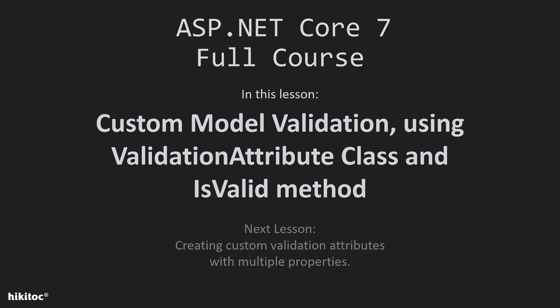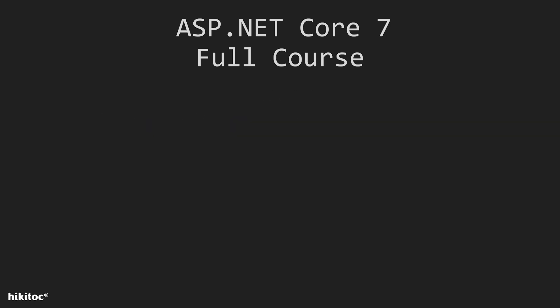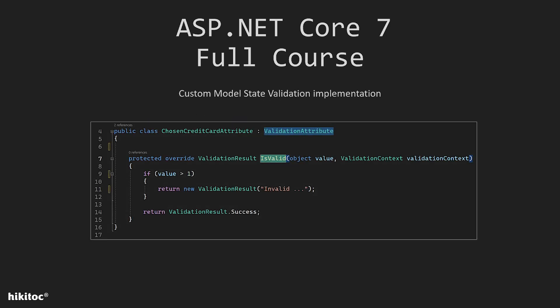In this lesson, we will create our own custom validation attribute using the ValidationAttribute class and the IsValid method. Let's imagine we have a custom business rule in a banking application that involves intricate logic specific to our application's needs, such as validating a combination of properties or checking against external services.